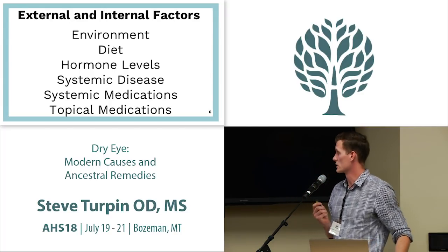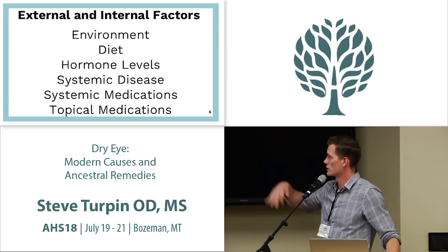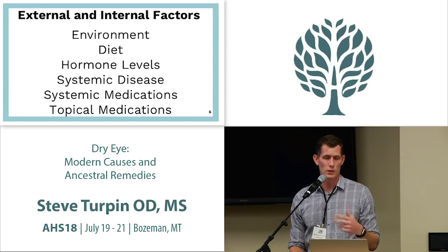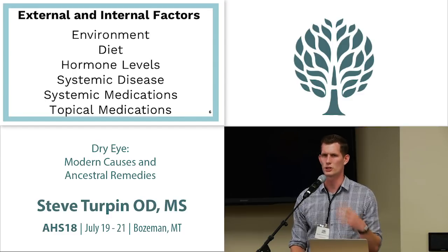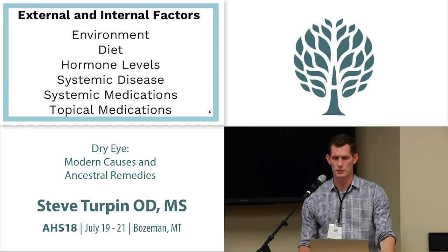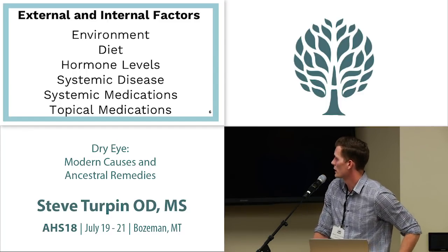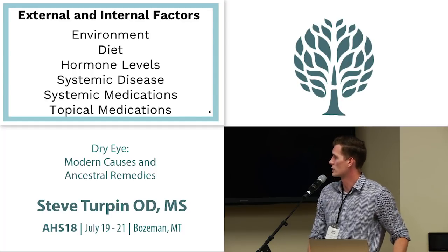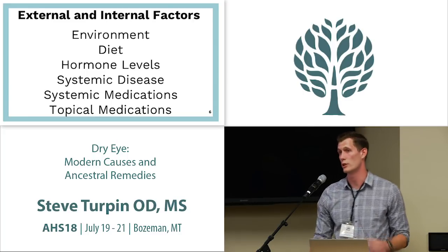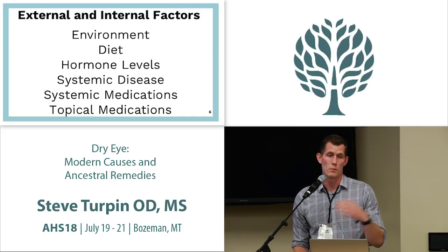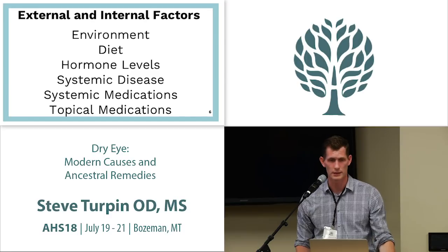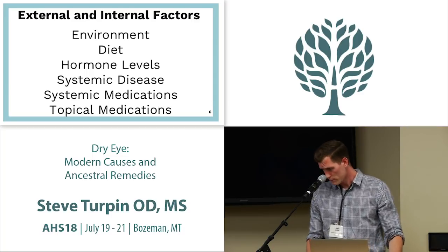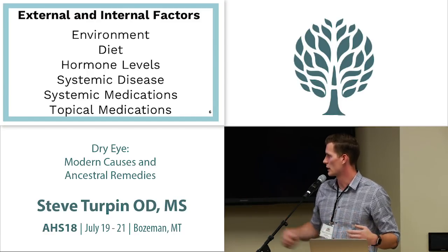The internal and external factors include environment, diet, hormone levels, systemic disease, and systemic and topical medications. Today we'll focus on the top four, because our goal in looking at health in an ancestral way is to use diet, movement, and those kinds of things to reduce our dependence on systemic and topical medications — building a base of healthy behaviors first.